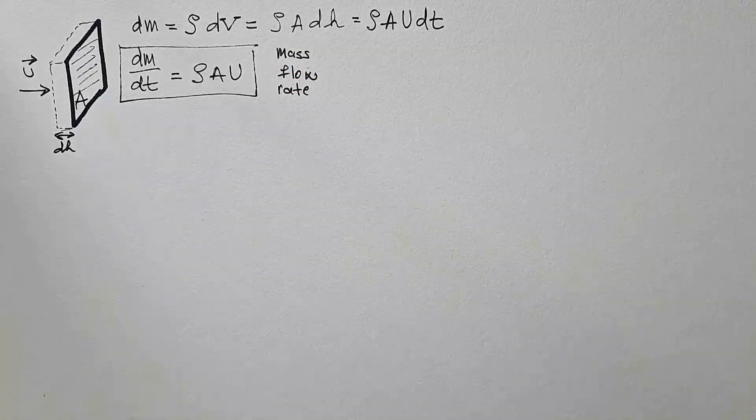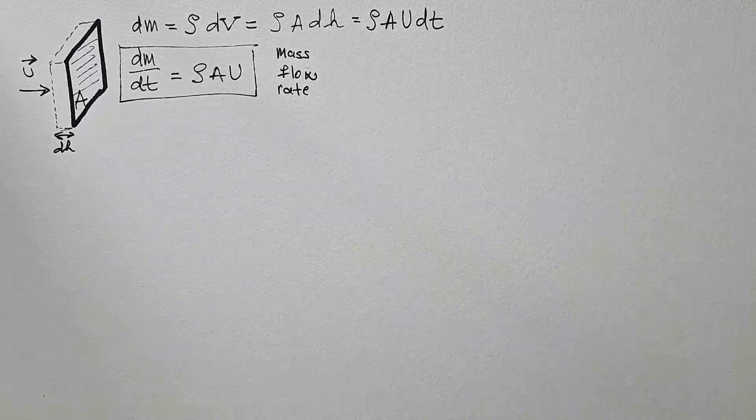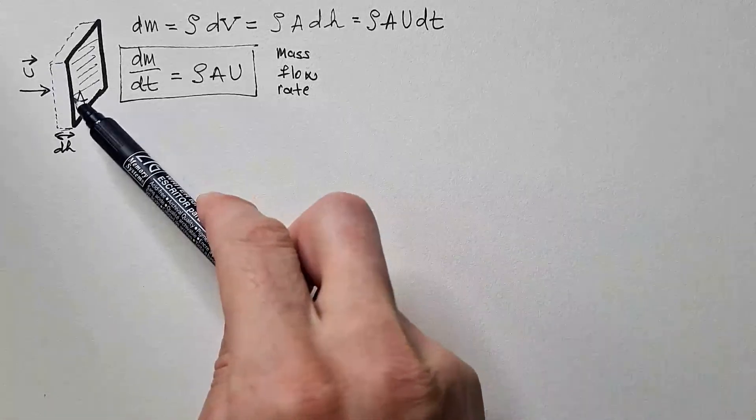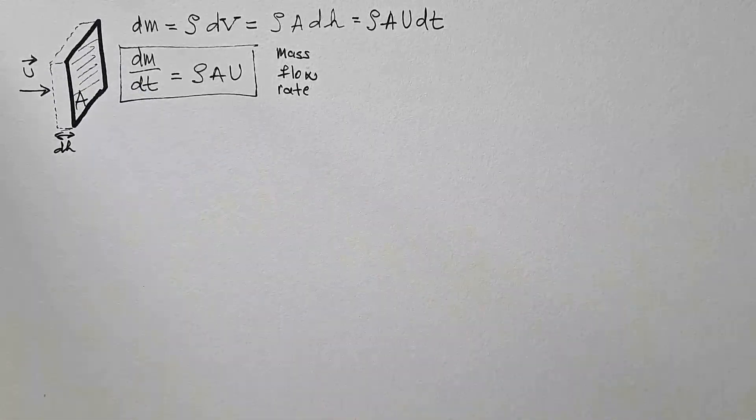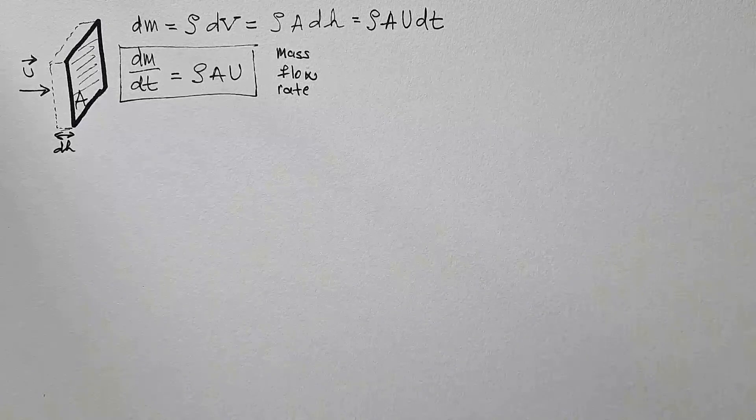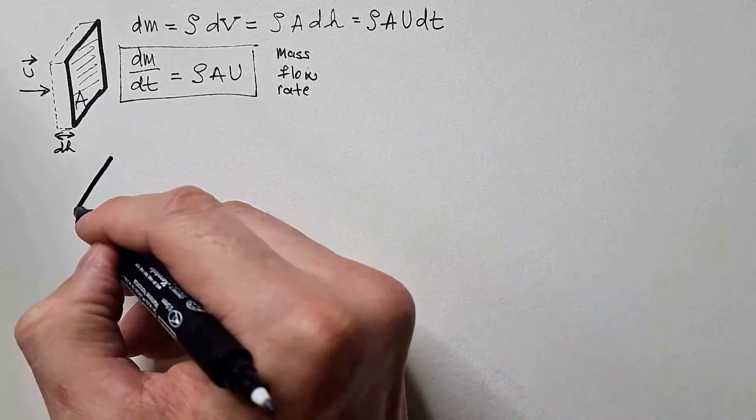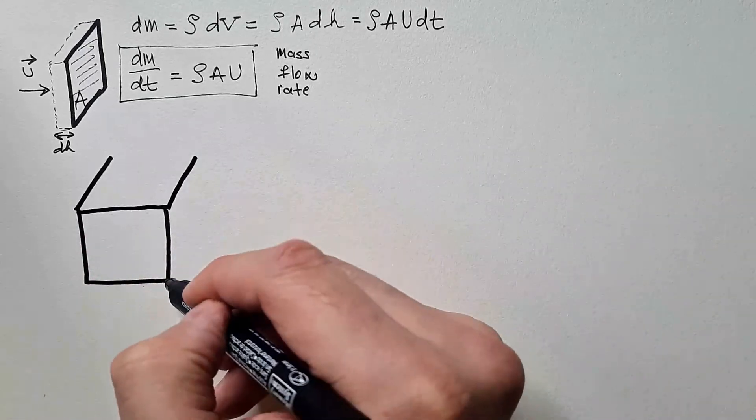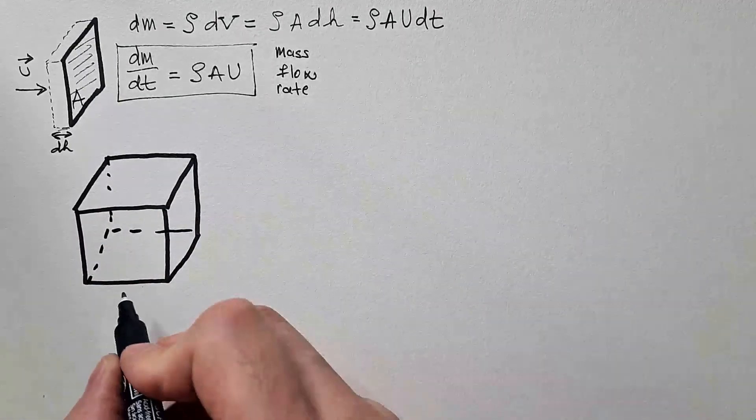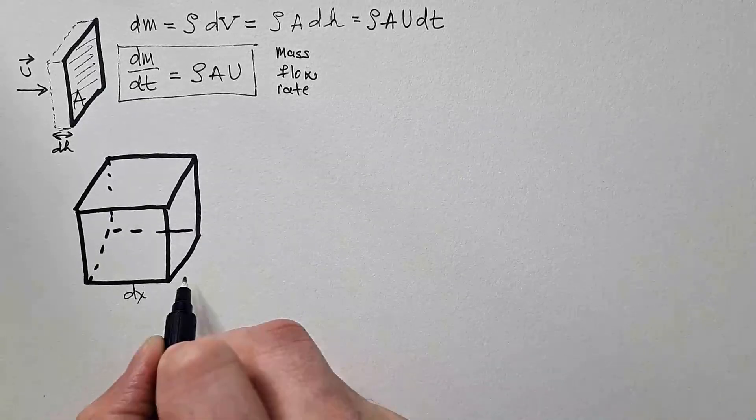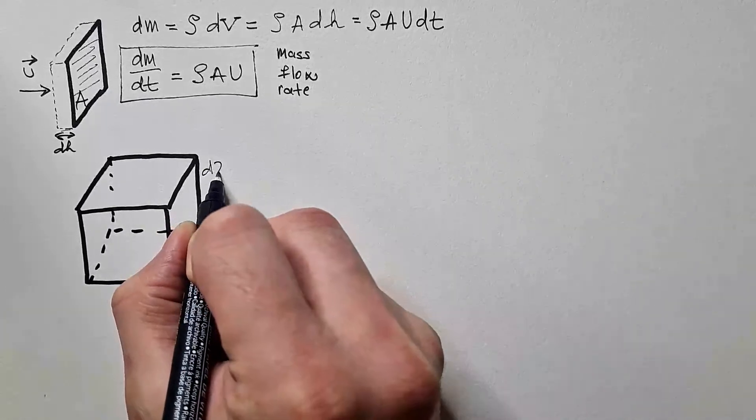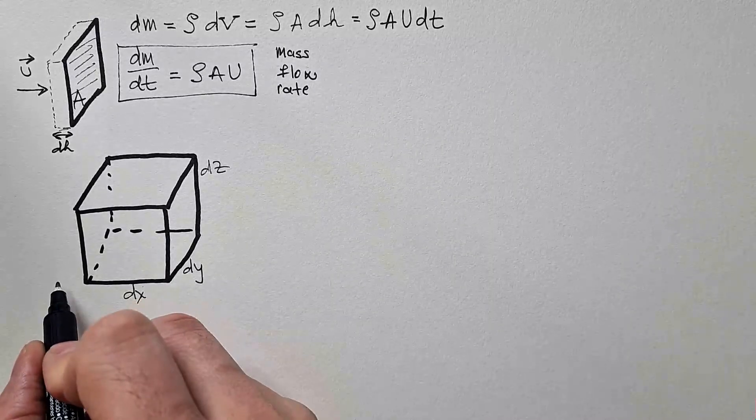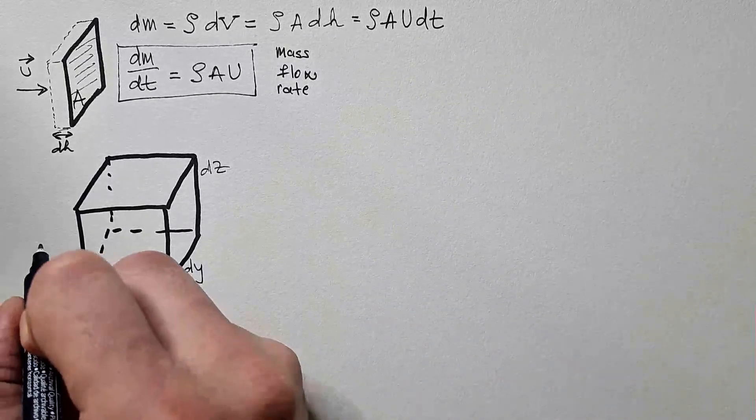Now, to get mass continuity equation in differential form, we will use this reasoning. But instead of one surface, we will apply it to a volume, which we call control volume. So let's say I have this cube. Cube has sides dx, dy, dz. And I will consider one dimensional flow along the x axis.